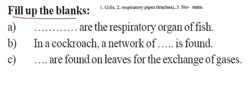Now, fill in the blanks. First: the respiratory organs of fish are gills. Second: in cockroach, the respiratory pipe is the trachea — so you can write trachea. Third: small pores found on leaf surfaces that exchange gases are called stomata — so you can write stomata.